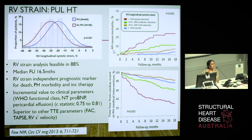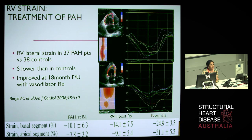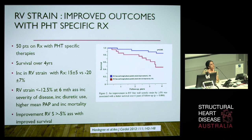In the treatment of pulmonary hypertension, an early small study showed that strain actually improved in patients who responded to specific treatments. A more recent study quantified the improvement, showing that if strain improved by 5%, patients did better. When followed up over time, an improvement in RV strain greater than 5% was associated with improved survival.